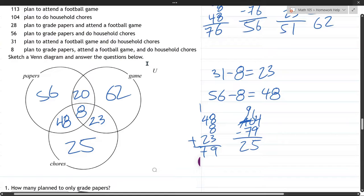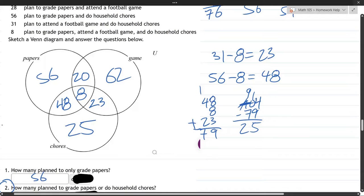How many plan to only grade papers? Alright. Only grade papers means, yes, we're in the circle. But only grade papers means don't count any of this right here. So, the answer to that is 56. There we go.